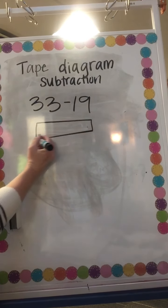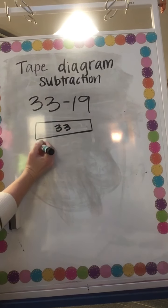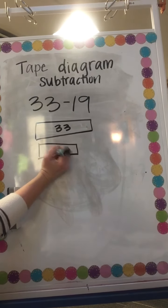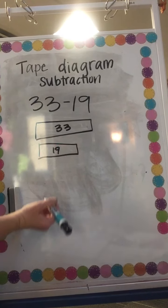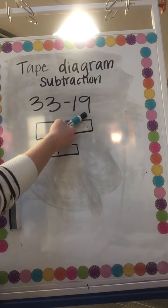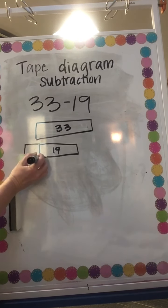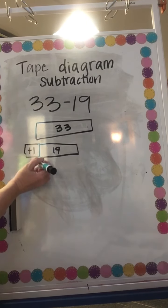My goal is that you can start doing some of this in your noggin without drawing it all right. So here I have my 33 and I'm gonna make it and I'm gonna take away my 19 and I'm gonna make it.